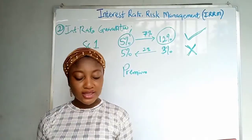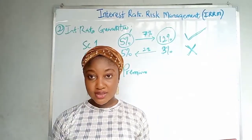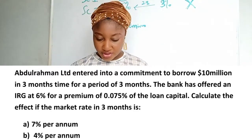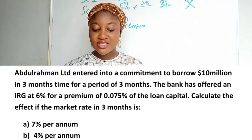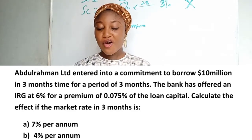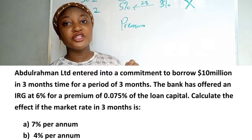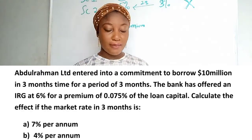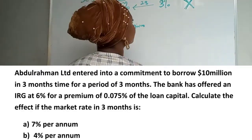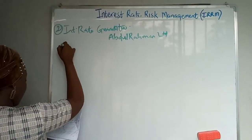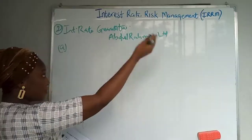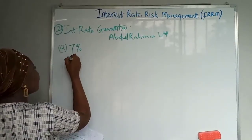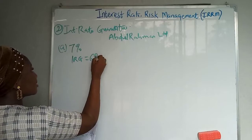The interest rate guarantee method addresses the limitations of the forward rate agreement. The question says: Abdurrahman Limited has entered into a commitment to borrow 10 million in three months' time for a period of three months. The bank has offered an IRG at six percent per annum for a premium of 0.075 percent of the loan capital. We need to calculate the effect if the market rate in three months is (a) seven percent and (b) four percent per annum.